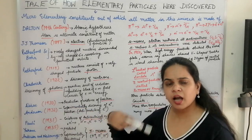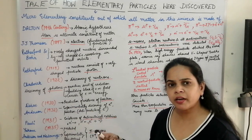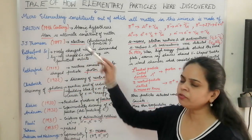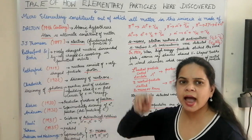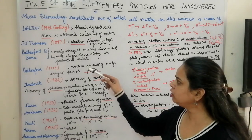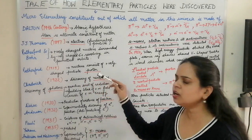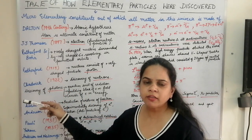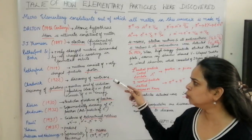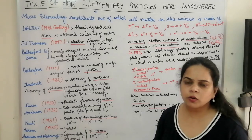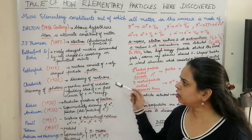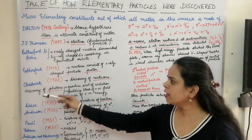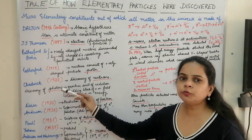Rutherford again improved his theory in 1919 and suggested that the nucleus, which is positively charged — since the atom as a whole is neutral — consists of positively charged particles called protons. Then in 1922, Chadwick gave the next fundamental particle: the neutron. So till 1922, three particles were discovered — electrons, protons, and neutrons.